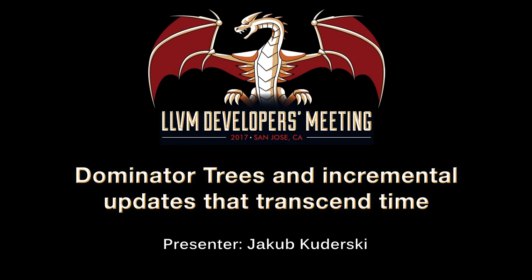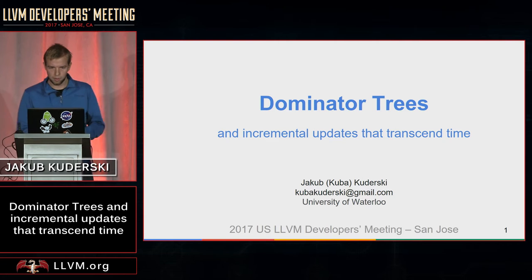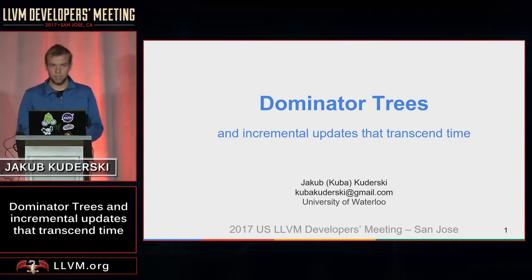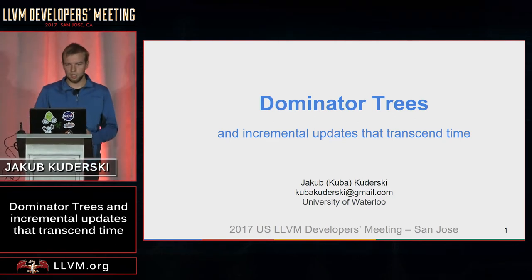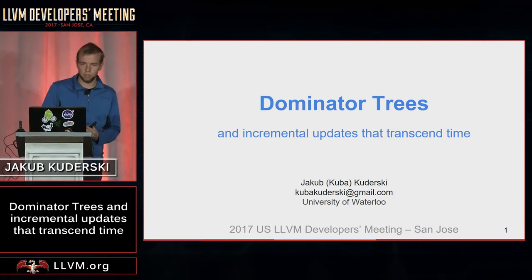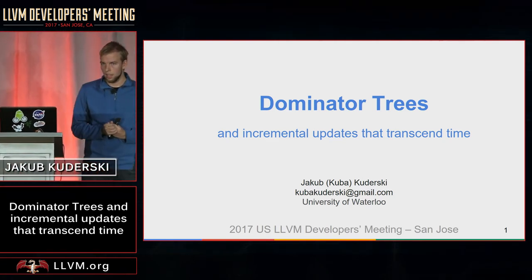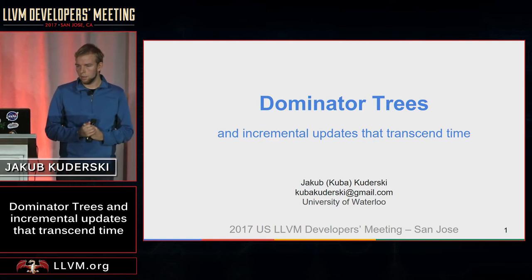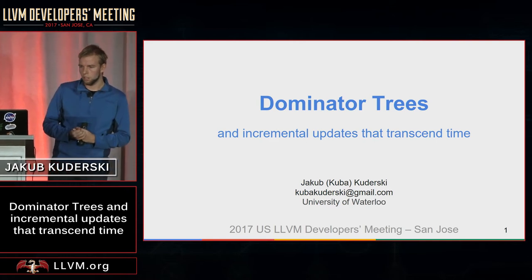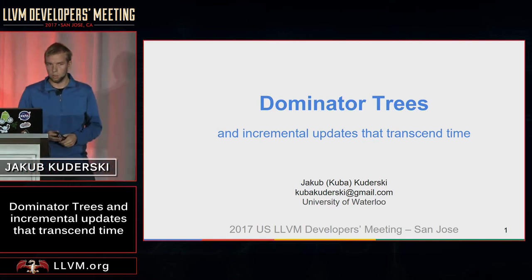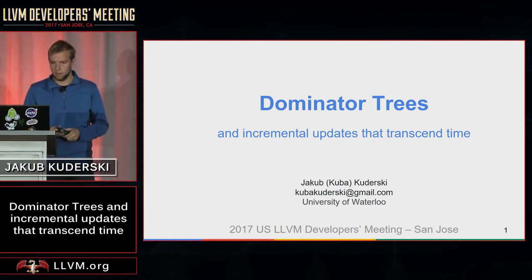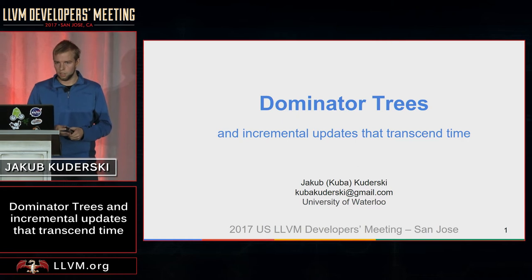My name is Jakub Kuderski. I often go by Kuba, which is short for Jakub — same thing as Robert Vogt. I'm a grad student at the University of Waterloo in Canada, and this summer I started working on improving dominators in LLVM. This was part of my intern project at Google.